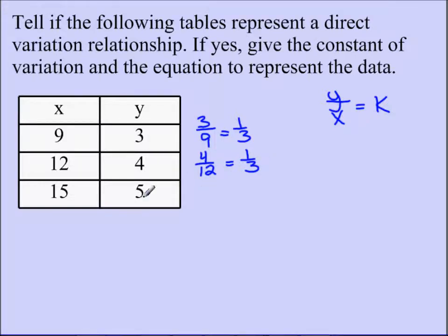Since I'm given three sets of values, I need to do it for each of the coordinates. So here, y is 5, x is 15. This reduces down to 1 third.